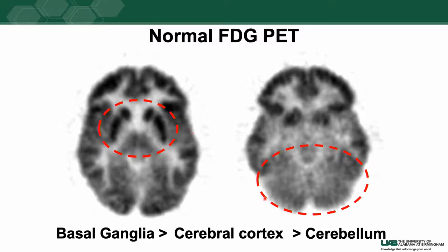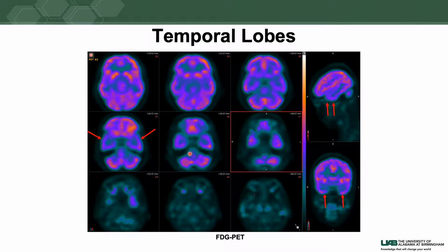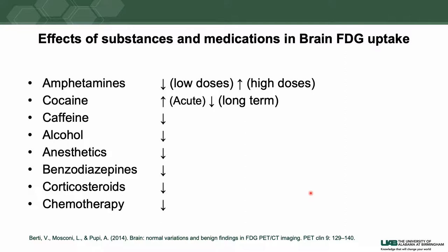Similarly, if you take the cerebral activity as 100, the activity in the cerebellum is approximately 10 percent lower than the cerebral activity. Another important thing when evaluating patients with temporal lobe epilepsy — the most common indication for a PET scan — is that the anterior and medial temporal lobes usually have the lowest FDG activity in the brain, so always be careful when evaluating temporal lobe epilepsy on FDG-PET.